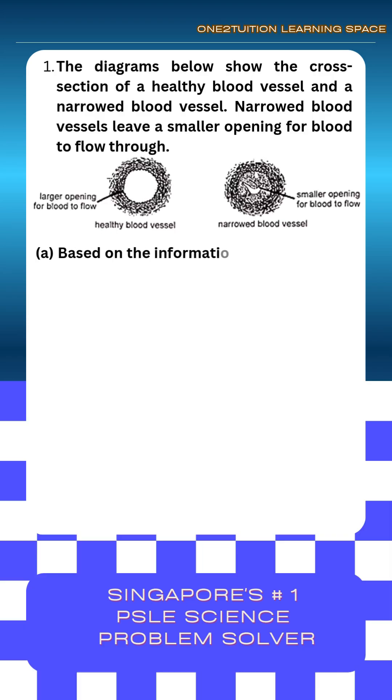A. Based on the information above, compare the rate of blood flow in the healthy blood vessel and the narrowed blood vessel.